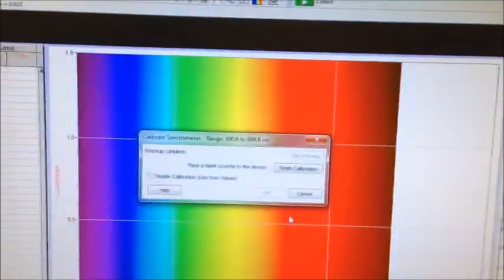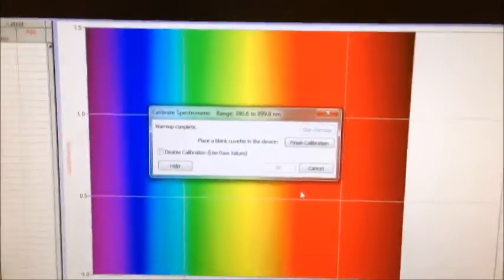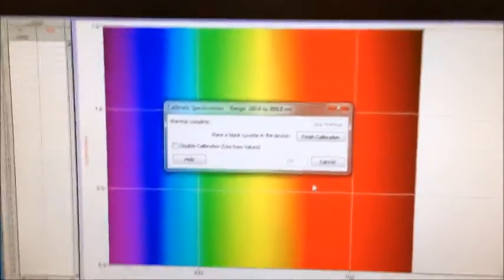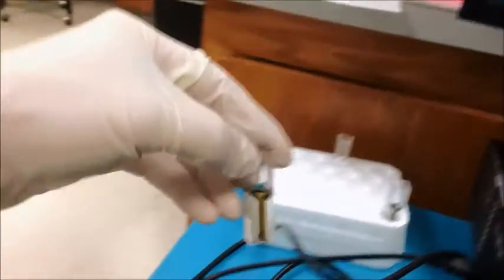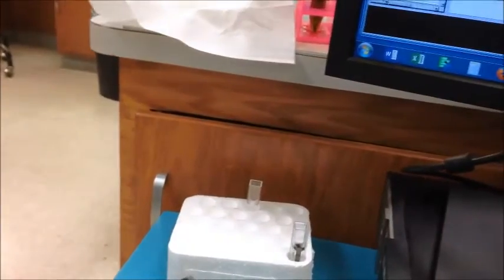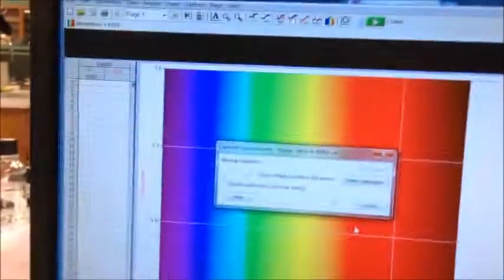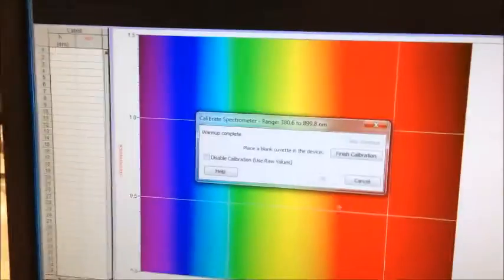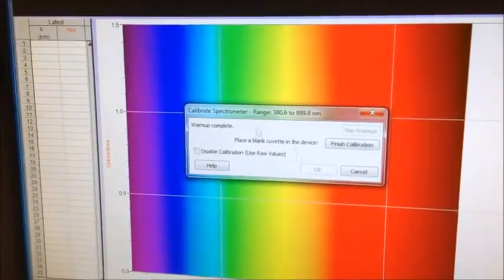So what I've done so far is to go ahead and let the spectrophotometer warm up. Now I have a sample here that has some of the brown Bradford reagent in it and that's my blank. So I'm going to go ahead and click on finish calibration.